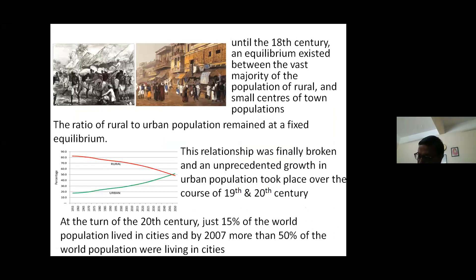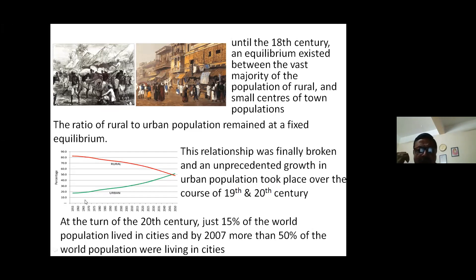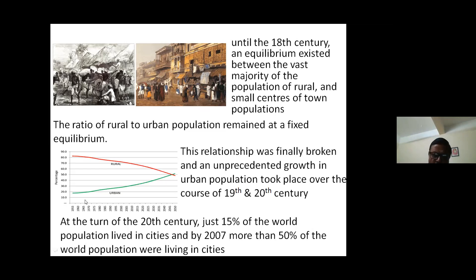If we look back at history, until the 18th century there was an equilibrium between the vast majority of the rural population and small centers of town population. The vast rural population was engaged in agriculture, and the small centers of town population were involved in economic activity, primarily trade and markets and manufacturing on a small scale. There was a ratio of rural to small urban population maintained at a fixed equilibrium, but this relationship was finally broken.